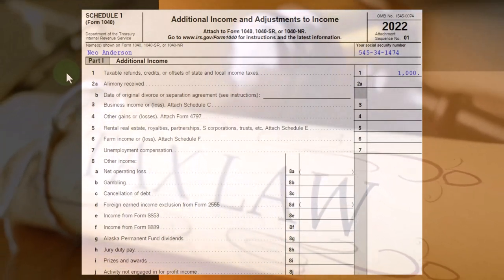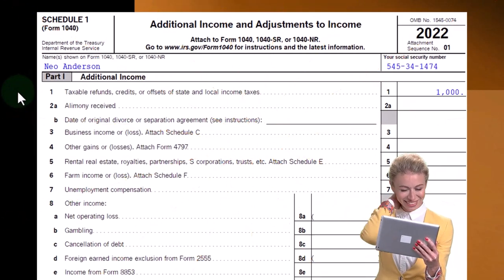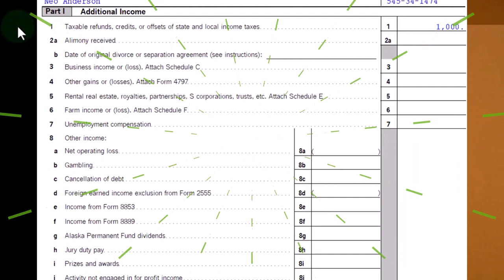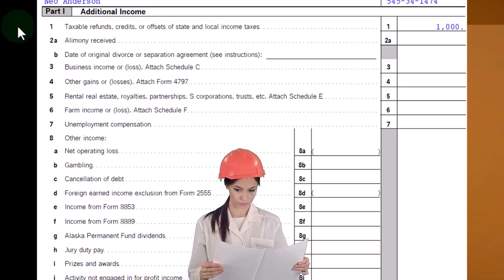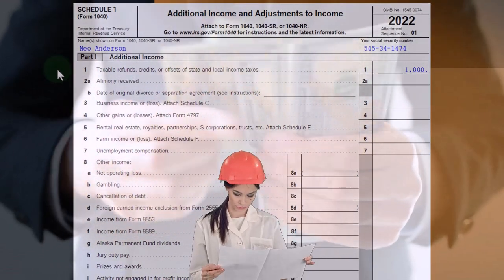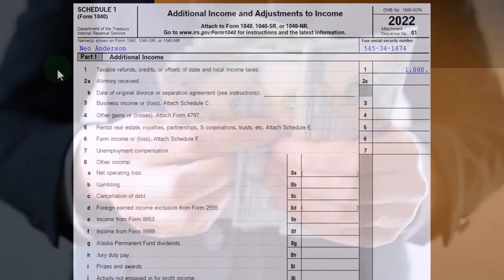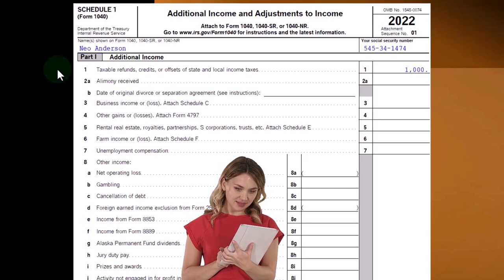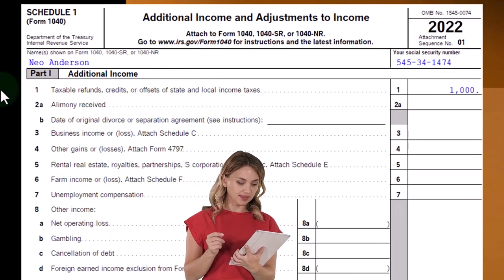The general rule would be: if you got a tax benefit from the prior year's state taxes — you deducted the state taxes that you paid — and then they give you a refund because you overpaid, that means you got an over-deduction. You deducted more in 2021 than you otherwise would have. You could go back and amend the federal income tax return to correct the itemized deductions, or you could just say: if you got a refund and you got a benefit from it, you have to include it in income in 2022.